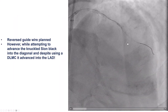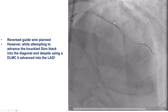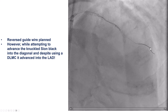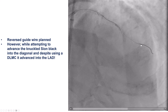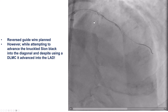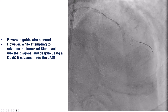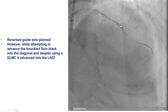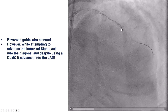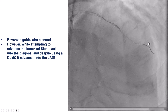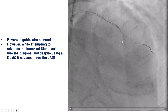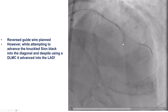Our plan was to start by treating the LAD. We advanced the workhorse wire in the diagonal, and then we planned to do wiring using the reverse guide wire technique. We used a dual-lumen microcatheter. However, instead of the knuckle going in the diagonal as we had planned, the knuckle kept on entering into the LAD.